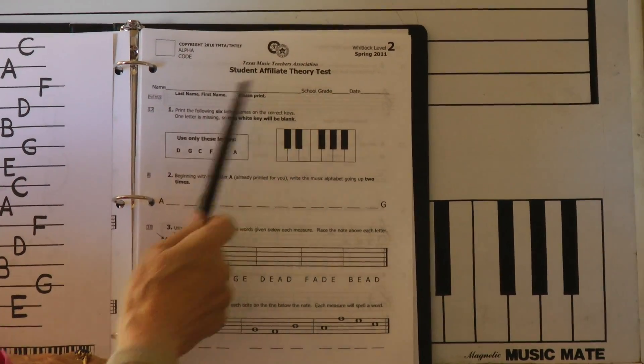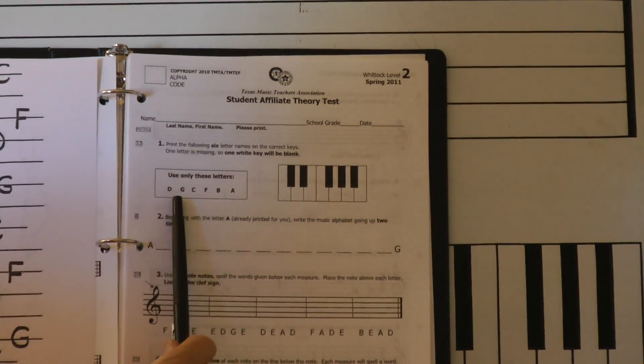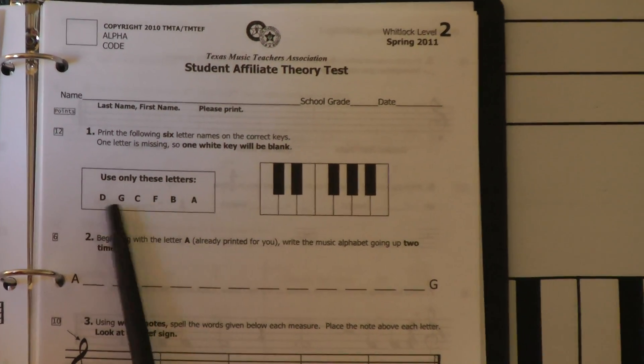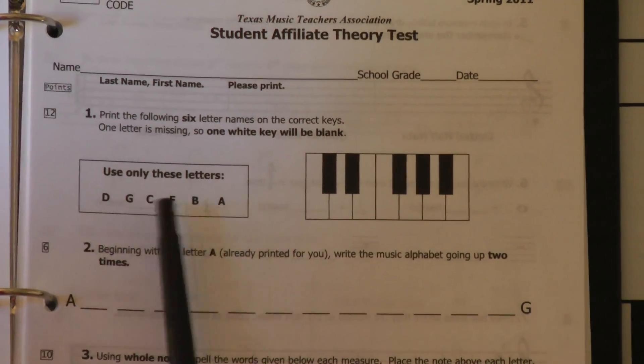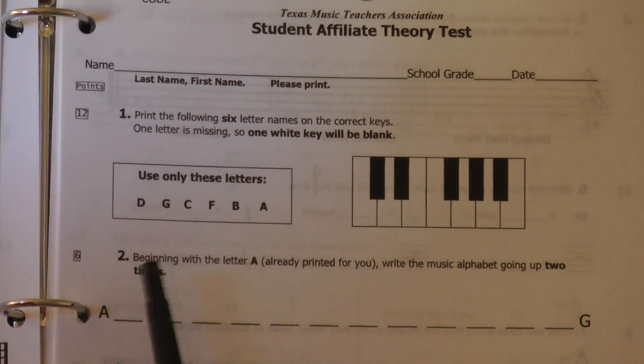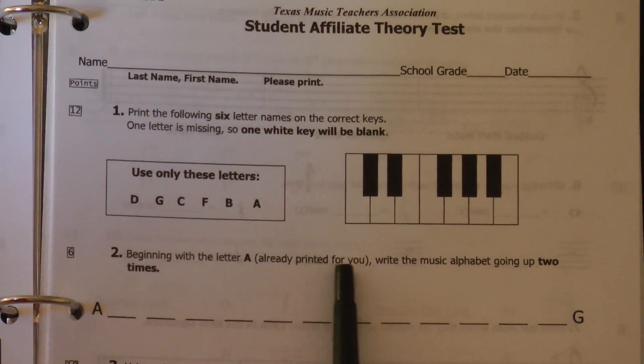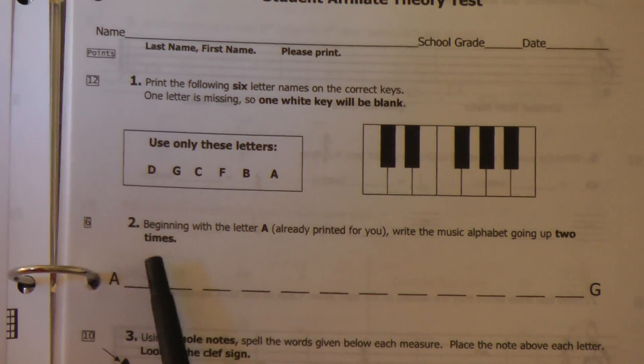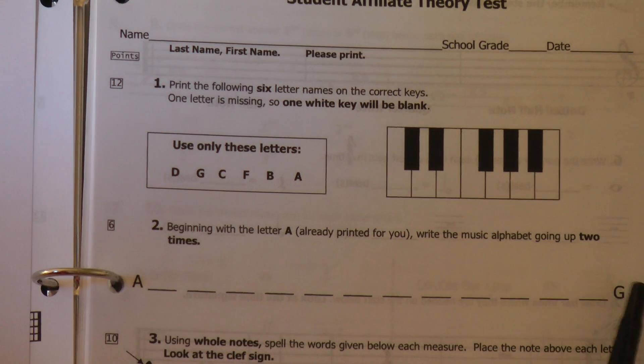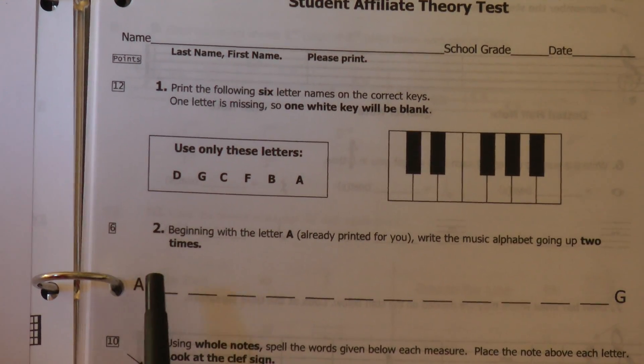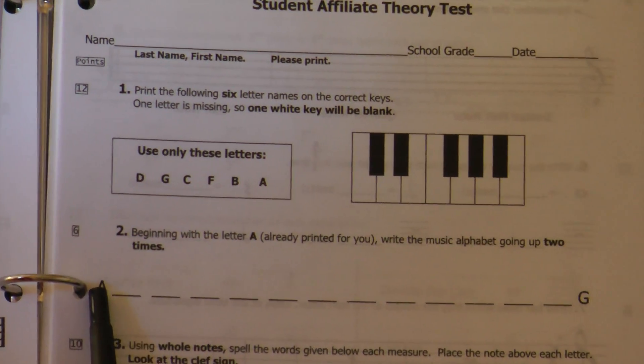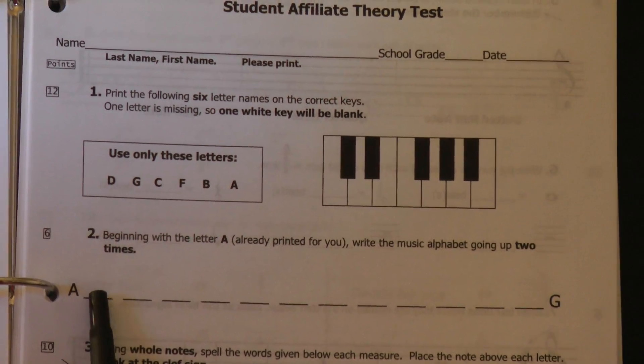We are on level 2 now, spring 2011. The first questions are pretty easy, so follow these directions and use the letters to put them here. Now beginning with A, it says go up two times. In other words, they're going to almost do two octaves, if you know what that is in music. So here starts A, your answers are B,